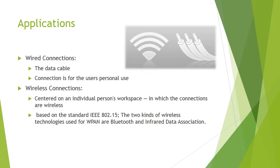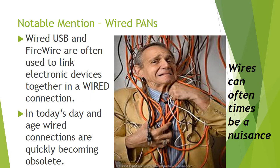Some of the applications of personal area networks include wired and wireless connections. Wired connections are being phased out in favor of wireless connections, because you don't have to deal with wires — it's just an easier way to use Bluetooth or any other personal area network. Wired USB and FireWire are often used to link devices together, but today these types of connections are going obsolete because they're just a hassle to deal with.